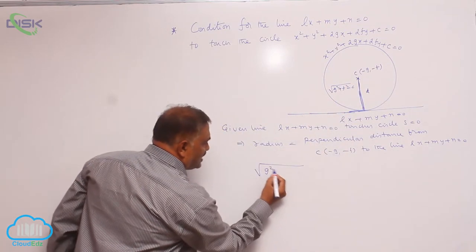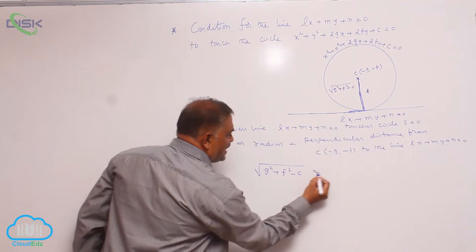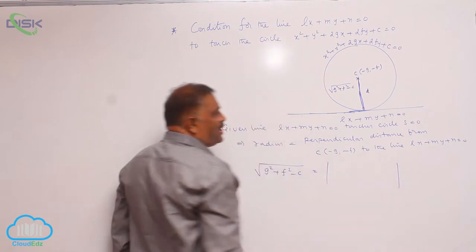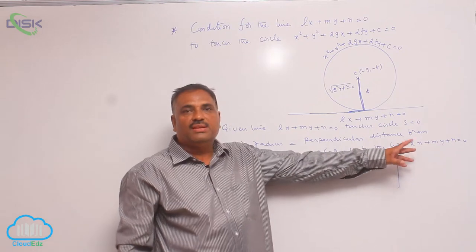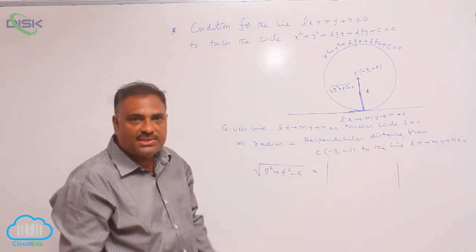So, root of g square plus f square minus c is equal to perpendicular distance. You know the formula a x 1 plus b y 1 plus c by root of a square plus b square.